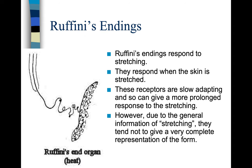Ruffini's endings respond to stretching — they respond when the skin is stretched. These receptors are slow-adapting, so they can give a more prolonged response to the stretching. However, due to the general nature of stretching information, they tend not to give a very complete representation of form. This is one of the reasons why, if you can't see something and you touch it, you're not exactly sure what it is — you feel around to try to determine what it is.